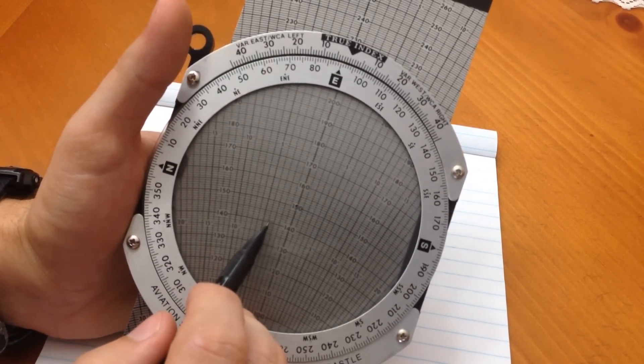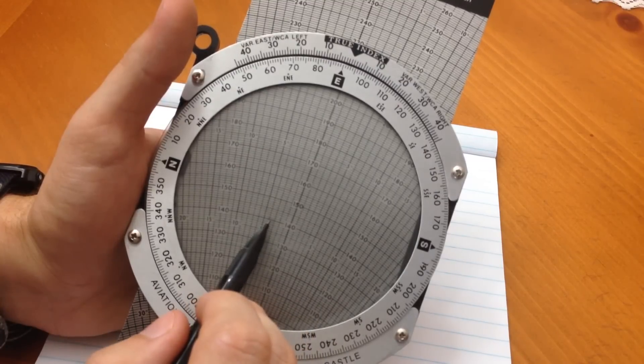I'm doing the dot that we marked as our air speed, or correction, as our wind speed before. So, 140 knots, we're going to go ahead and put that dot right there.